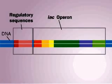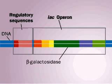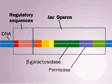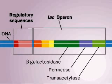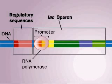The operon controls expression of genes for beta-galactosidase, which splits the disaccharide, permease, which transports lactose into the cell, and transacetylase. These structural genes are transcribed when RNA polymerase can bind the promoter controlling them.